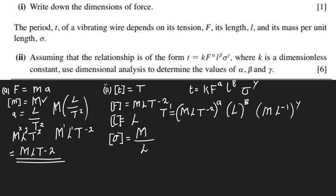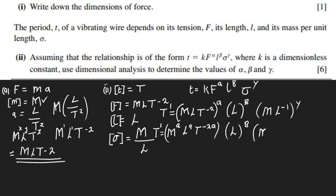Now we expand everything. T to the power one equals M to the power a, times L to the power a, times T to the power negative two a — putting that in brackets — then L to the power b, then M to the power y, then L to the power negative y.